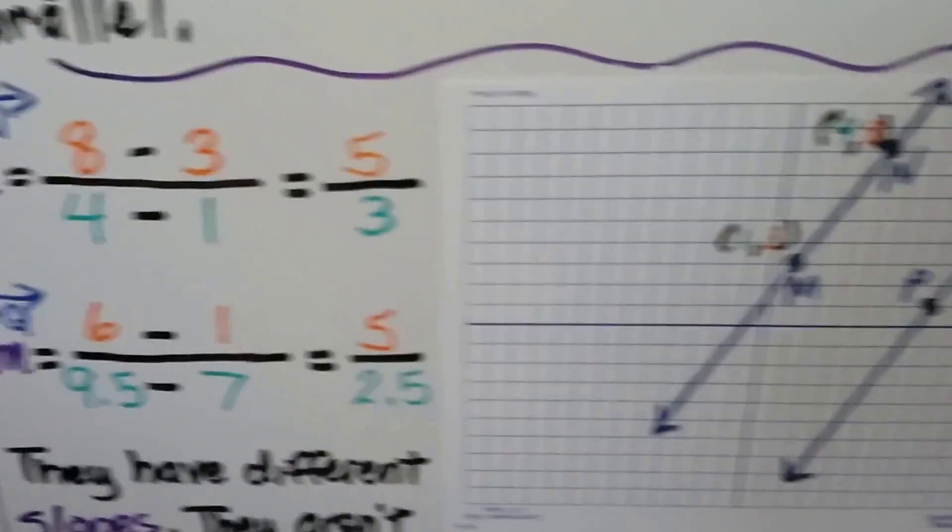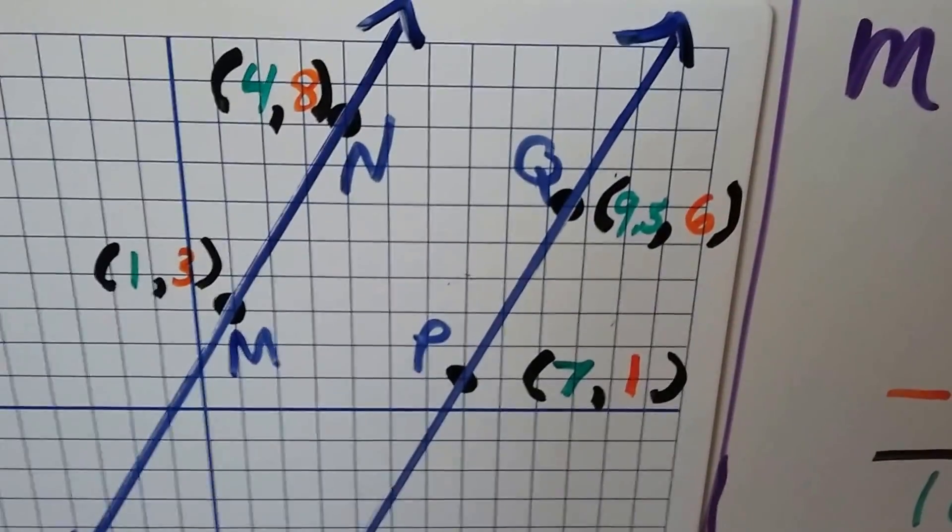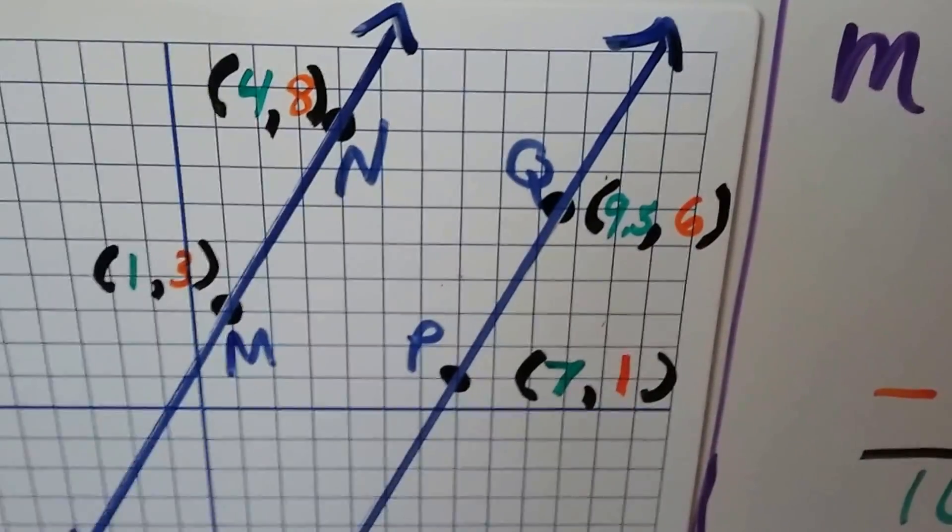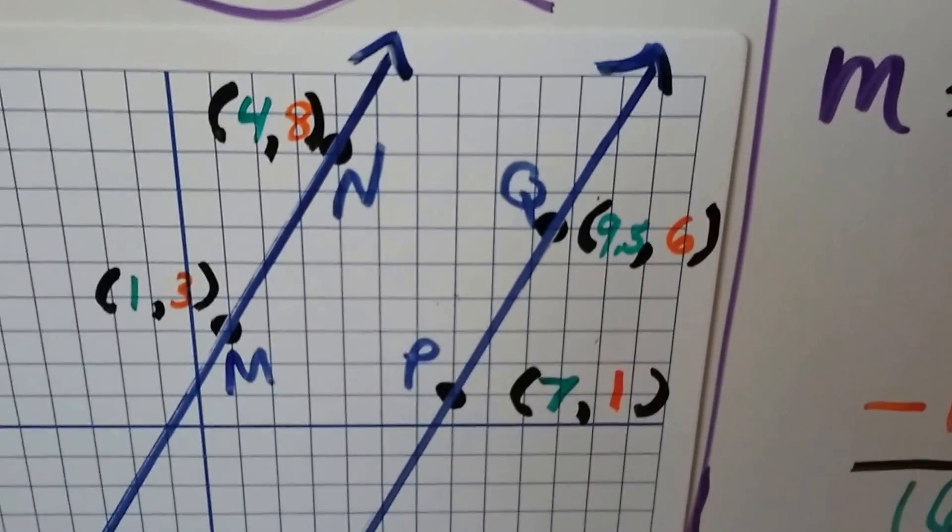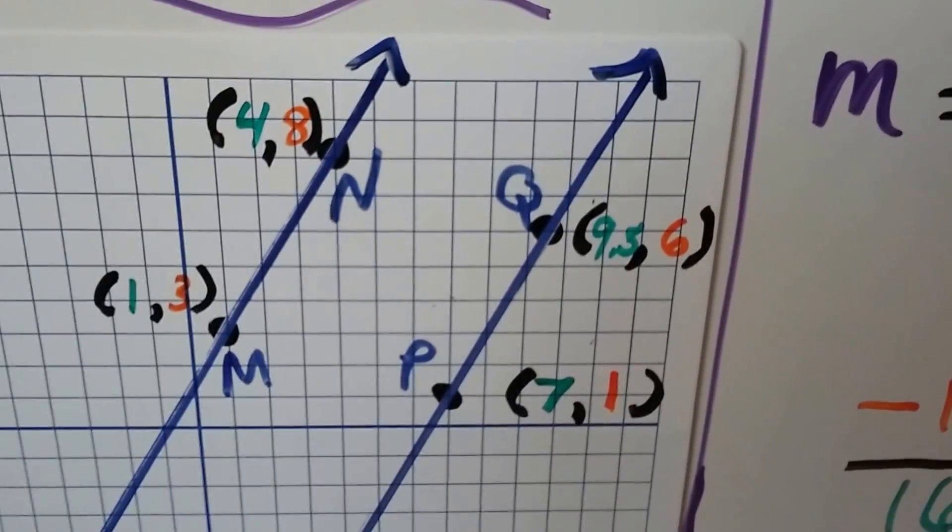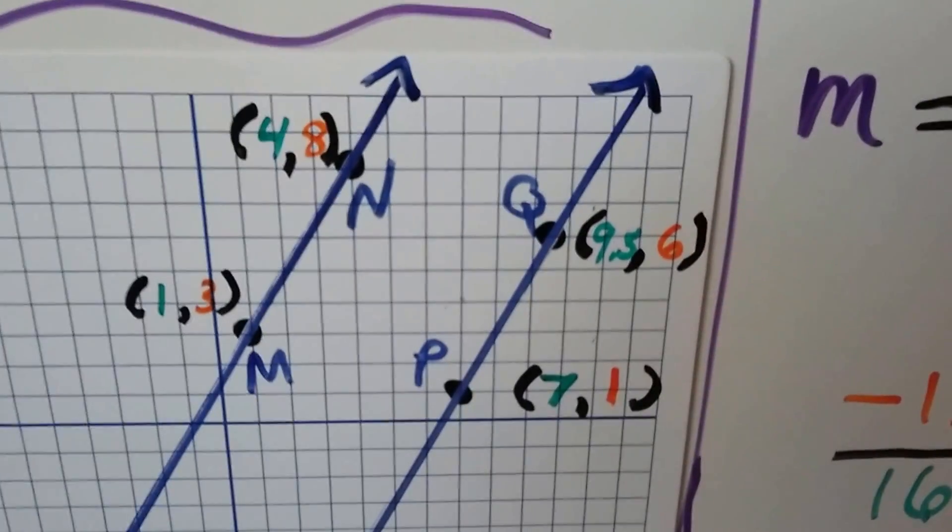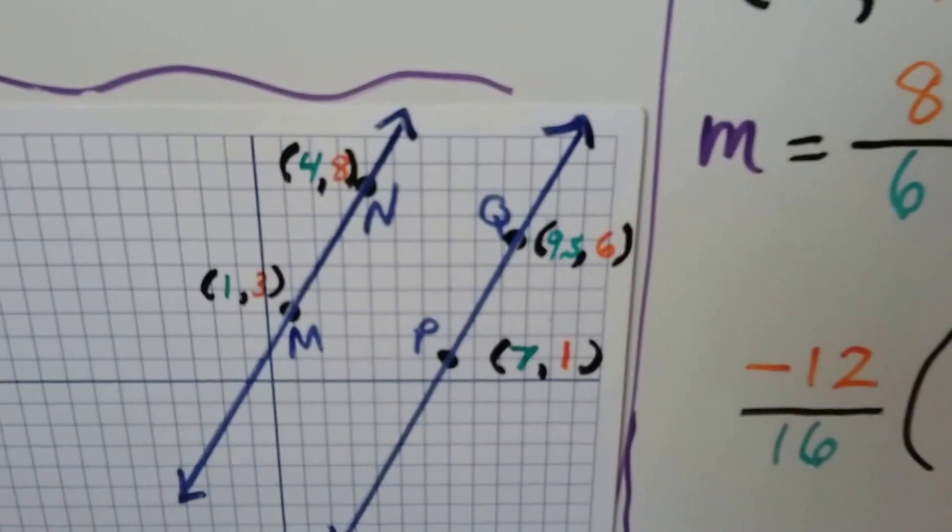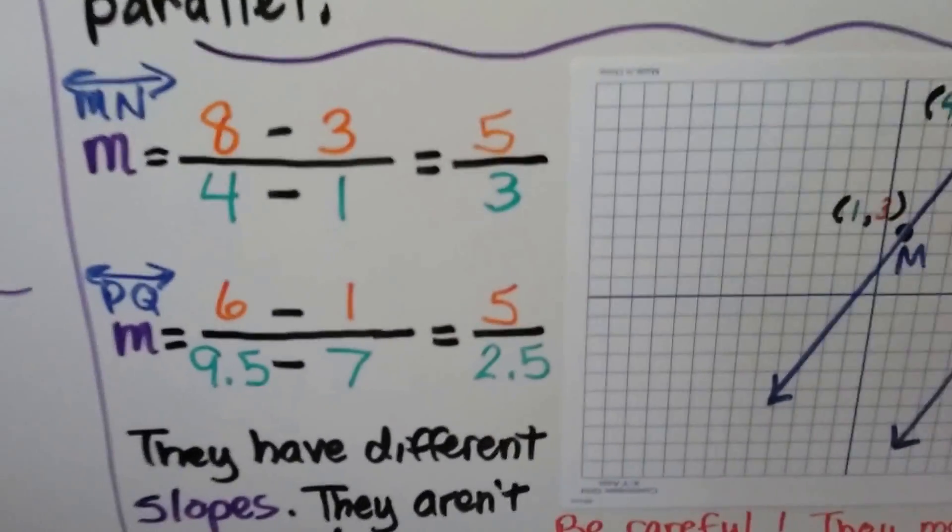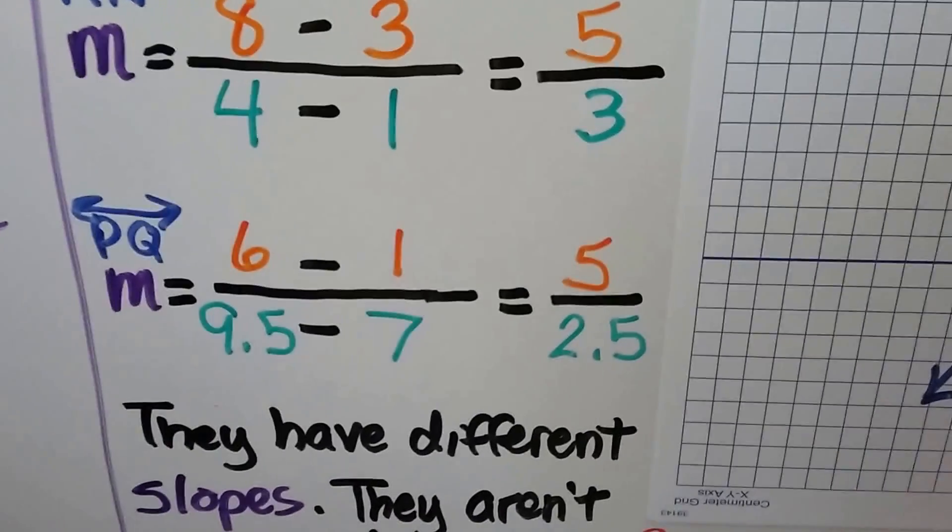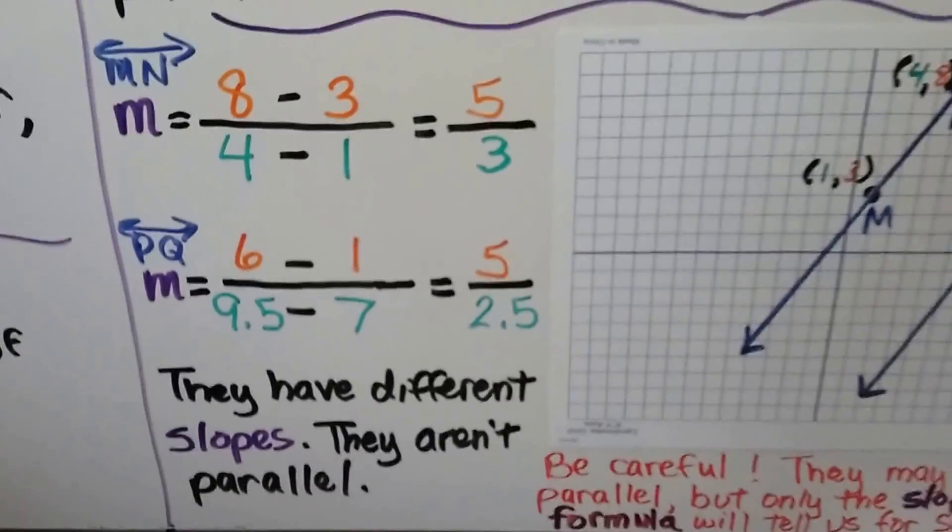Now let's look at line PQ. P, we start with the one on the left, has an x value of 7 and a y value of 1. Q has an x value of 9.5 and a y value of 6. We're going to do 6 - 1 over 9.5 - 7. 6 - 1 is 5. 9.5 - 7 is 2.5. They have different slopes.